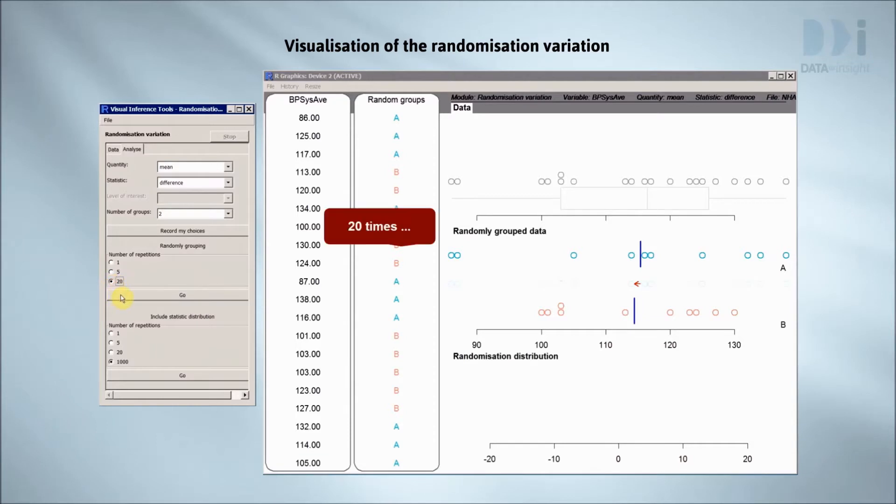Now I'll do it 20 times. Did you notice that sometimes there were quite big differences between my randomly chosen groups? Watch again. Look at this one. Treatment B is clearly reducing blood pressure. But of course it's not. Treatment B is not a treatment at all. What we're seeing is just the result of random labeling.